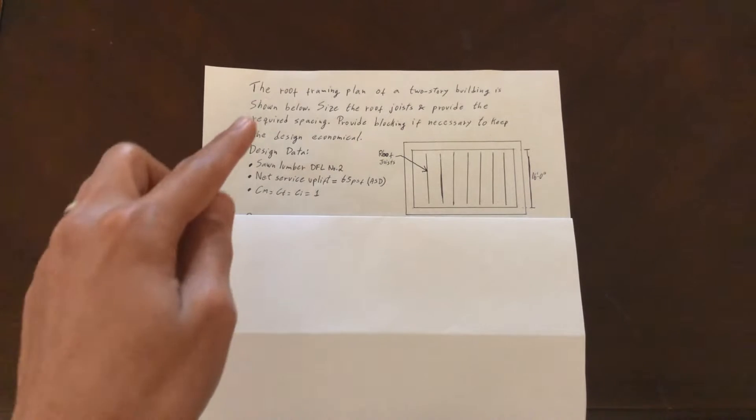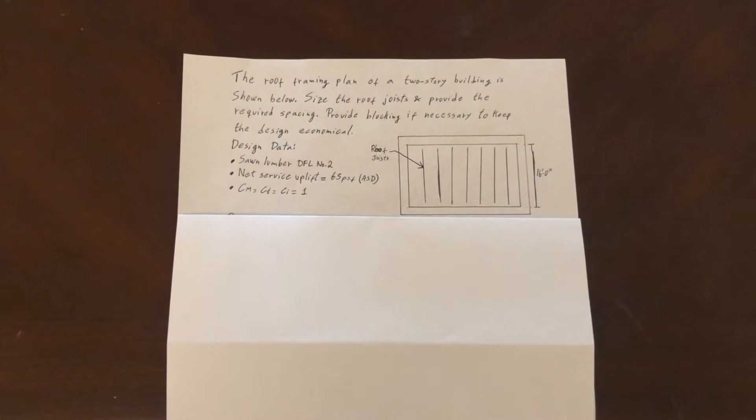Alright, so our problem states the roof framing plan of a two-story building is shown below. Size the roof joists and provide the required spacing. Provide blocking if necessary to keep the design economical.